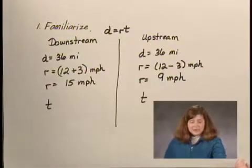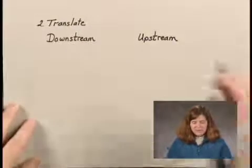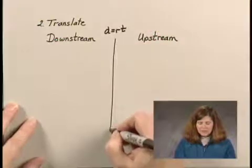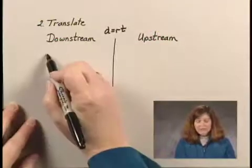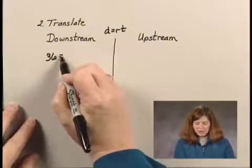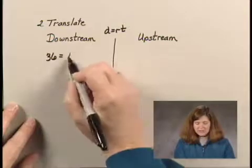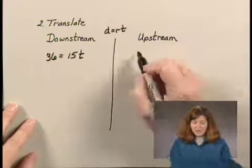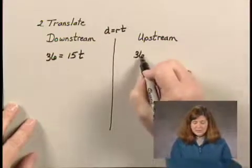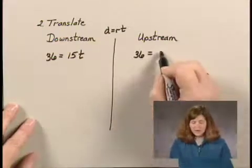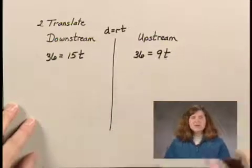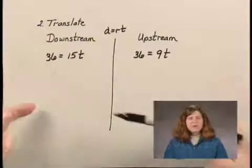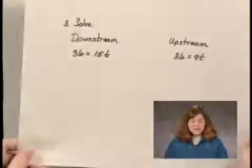So we can go to the translate step. To translate, we'll use the equation D equals RT. Downstream, we have the distance of 36 equals the rate of 15 times the downstream time. Upstream, we have the distance of 36 equals the upstream rate of 9 times the upstream time. To solve for time, we need to solve both of these equations — that's step 3, the solve step.